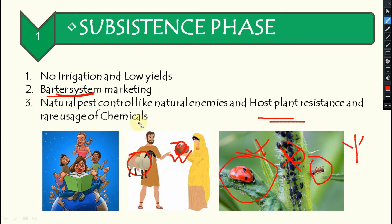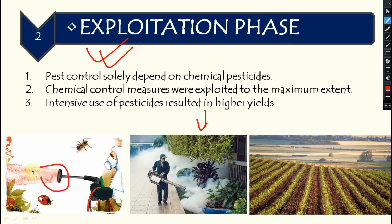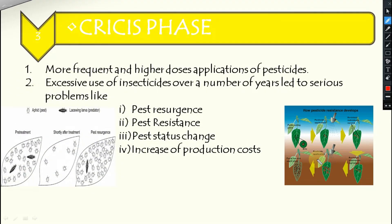The second phase is the exploitation phase. After the invention of DDT and similar chemicals, farmers realized that applying pesticides would automatically reduce pests. They became solely dependent on chemical pesticides to control pests, not using any other means. Chemical control measures were exploited heavily in the field, and as a result, crop yields were significantly boosted and maximum returns came.